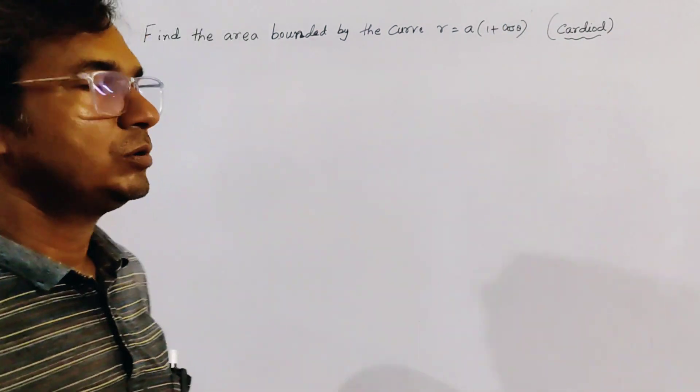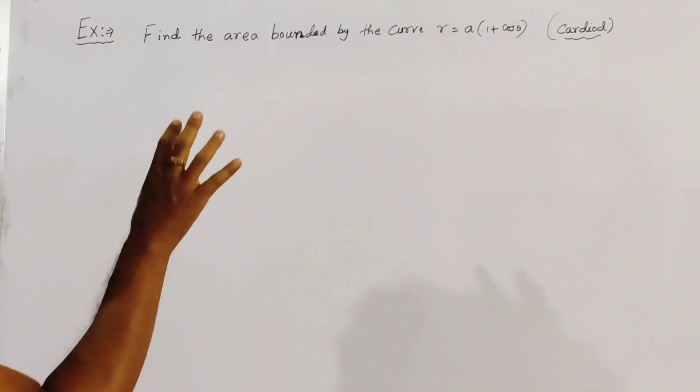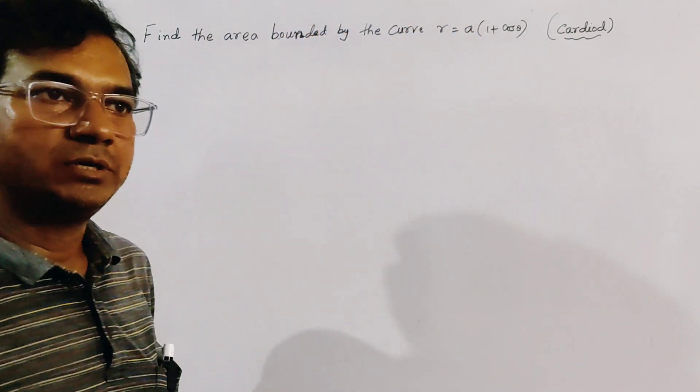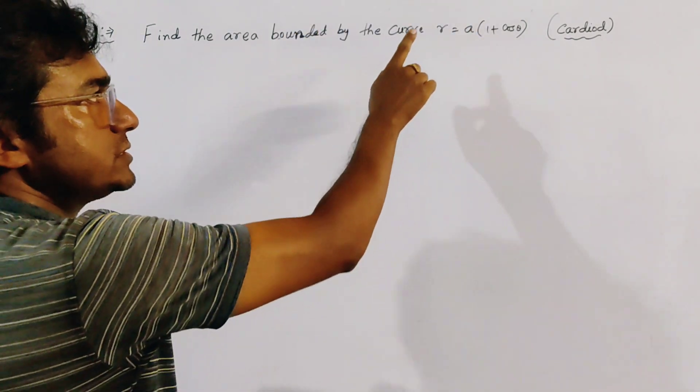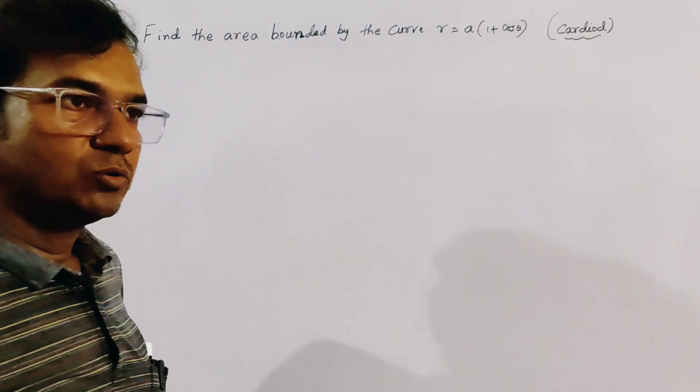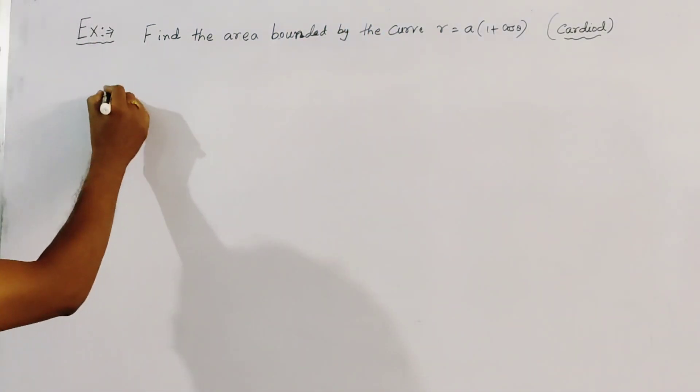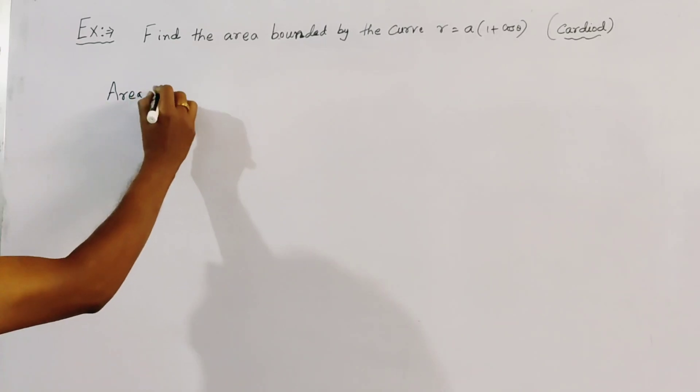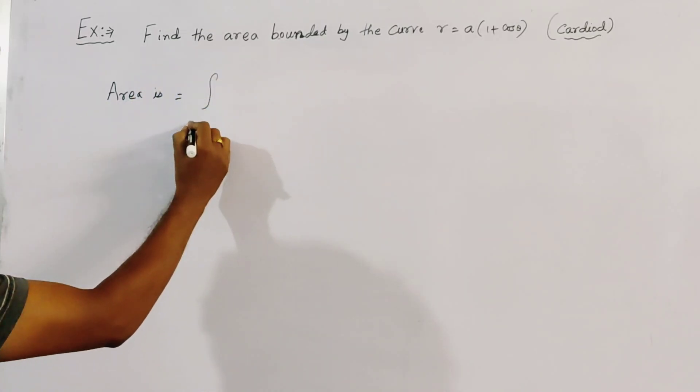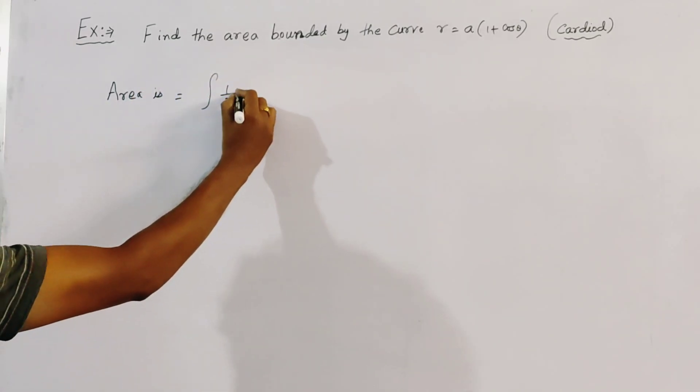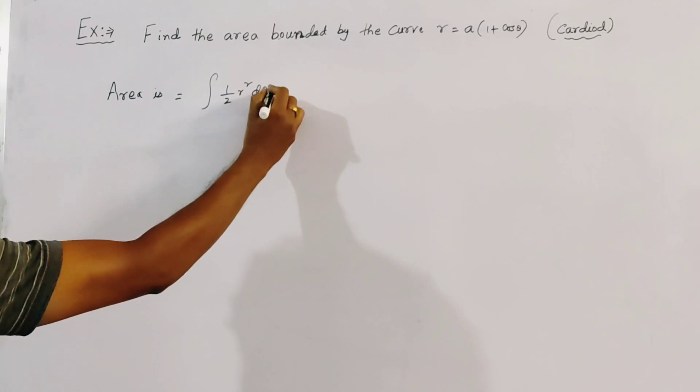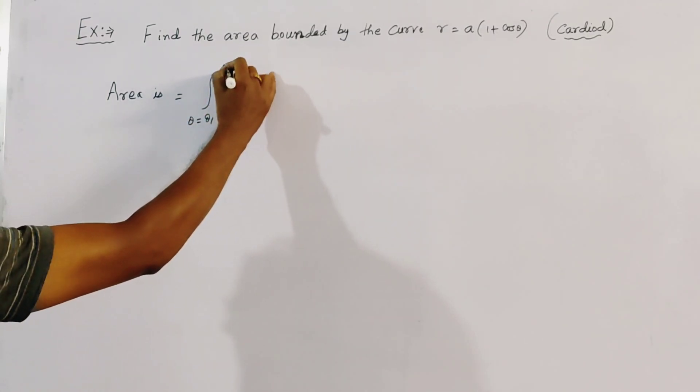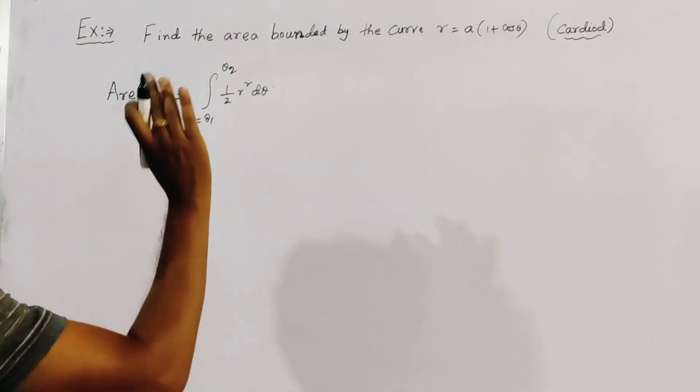Now we first try to sketch a rough figure of the cardioid, and since this is in polar coordinates we know that the formula of area is given by integration half R squared d theta from theta equal to theta 1 to theta equal to theta 2. This is the formula of area.